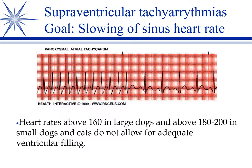Of the tachyarrhythmias, we divide them further into supraventricular — meaning the atria, and typically the SA node — or ventricular. Here's an example of a supraventricular tachycardia called paroxysmal atrial tachycardia. The SA node is still controlling things but firing rapidly. There's a P wave for every QRS. This then slows down — that's what paroxysmal means: bursts followed by normal activity.